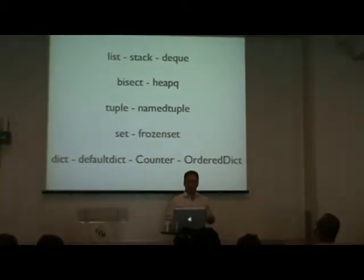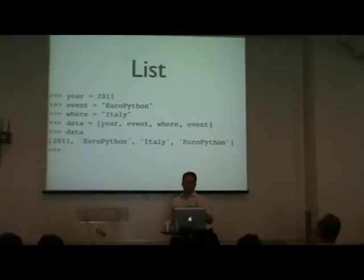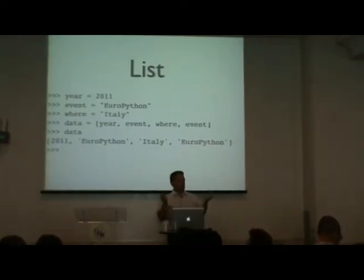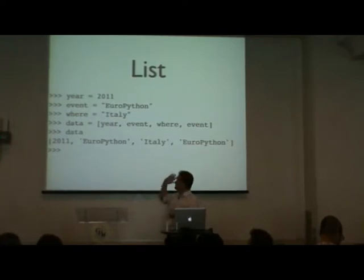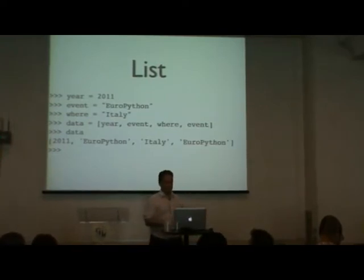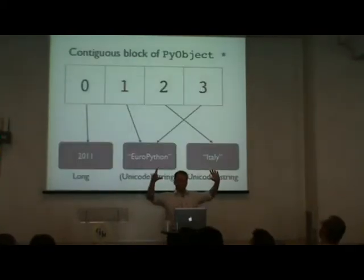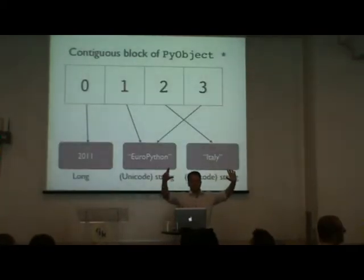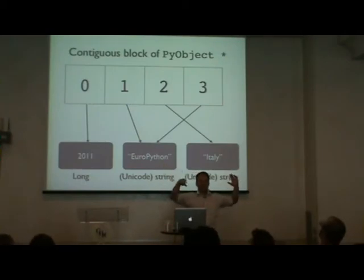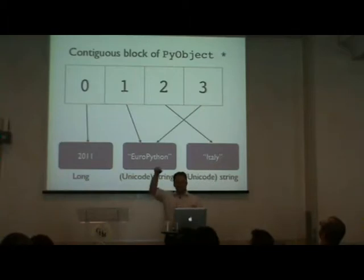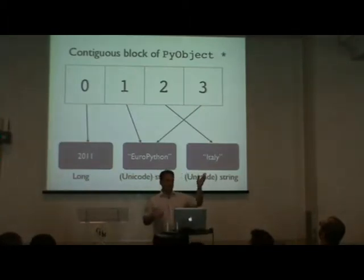To understand the reason for these, I'm going to start talking about lists. I think everybody here knows what a list is. A list contains an ordered collection of arbitrary data types. The way to think about a list is that it is a contiguous block of references — high-level object pointers pointing to the actual reference data objects.